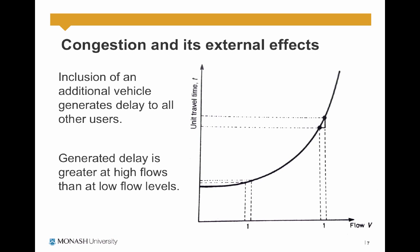Another thing you can see in this visual representation is that generated delay is greater at higher flows than at low flow levels. On the lower flow range, if you increase the flow by one unit, there is an increase in travel time for all users. But at a greater flow range, if you increase the same amount of flow, a larger increase in travel time will be achieved.